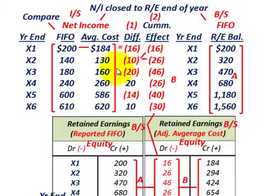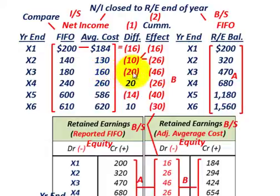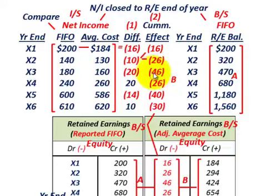For year X3, FIFO was $180,000 versus average cost of $160,000, giving another reduction of $20,000 in net income. Adding that to the previous cumulative amount of $26,000, we now have $46,000 as the cumulative effect — the total reduction in net income through year X3.